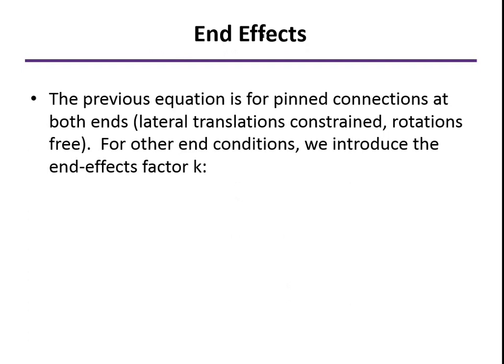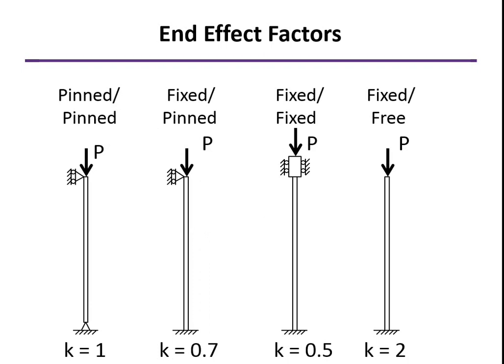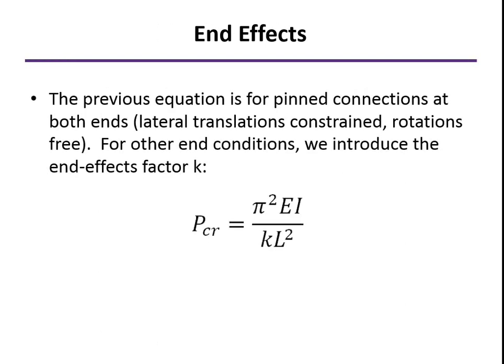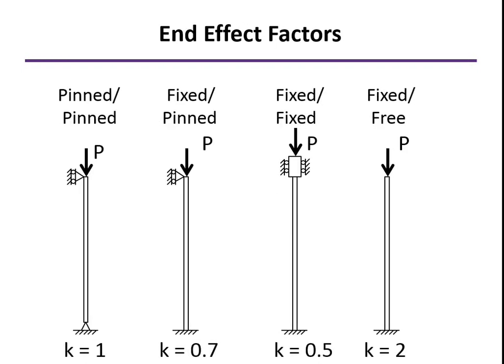If we have other kind of end conditions, then we can do a similar kind of thing, although the math gets a little bit more difficult, and we come up with a similar result, and this value of K is what's called the end effects factor. Our baseline was pinned-pinned, and for that, K is equal to one. You can see if we fix it on one end, we make it harder to buckle. The K value, which is in the denominator here, makes the P critical value go higher. If both ends are fixed, that is, both ends are constrained against rotation as well as translation, then the K value goes higher yet. The highest value of K, which corresponds to the lowest value of buckling load, would come if the column is fixed at its base and free to move about and rotate at the top.